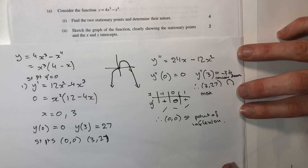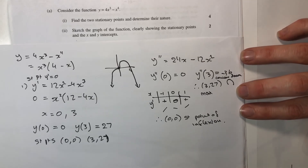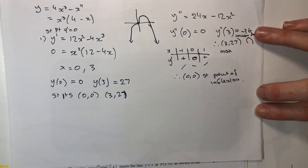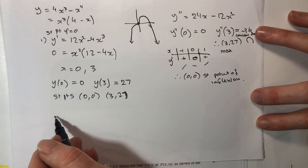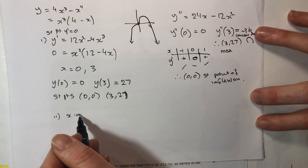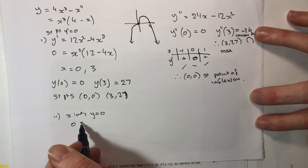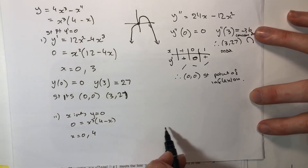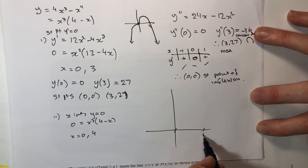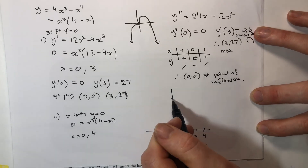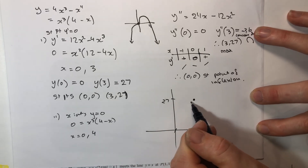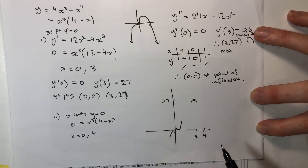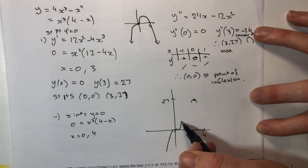Now we need to sketch the graph clearly showing the stationary points and intercepts. For part 2, to find x-intercepts let y equal 0: 0 equals x cubed times (4 minus x), so x equals 0 or x equals 4. Plotting x-intercepts at 0 and 4, the maximum at (3, 27), and the stationary point of inflection at (0, 0) with an up-flat-up gradient pattern — from there all I need to do is join the dots.